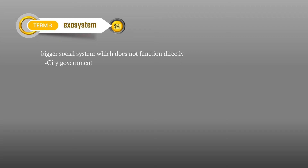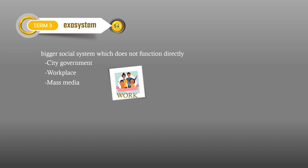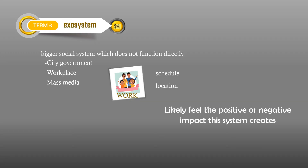The Exosystem. This layer refers to the bigger social system in which the child does not function directly. This includes the city government, the workplace, and the mass media. The structures in this layer may influence the child's development by somehow affecting some structure in the child's microsystem. This includes the circumstances of the parent's work, like the location or schedules. We see a change in the children's routine when, for example, the mother works in a call center — as seen in the burger chain commercial where the mom and the children meet up at the fast food for breakfast just before the children go to school and the mom goes home from work. The child may not interact directly with what is in the exosystem, but he is likely to feel the positive or negative impact this system creates as it interacts with the child's own system.